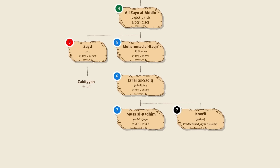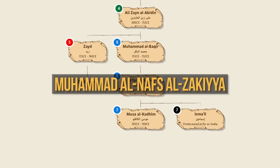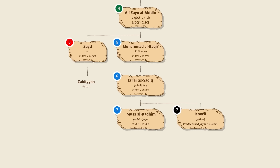During Musa al-Kadhim's time, the Abbasids decided to crack down on the descendants of Ali, called Alids, because of a revolt led by an Alid named Muhammad al-Nafs al-Zakiyya. He was a descendant of Al-Hasan ibn Ali, the second Imam. This resulted in a serious breakdown of relations between the Abbasids and the Alids. Musa al-Kadhim, along with other Alids, had to pay the price — he spent prolonged periods imprisoned in Baghdad. According to the Twelvers, all 12 Imams were murdered: the first Imam Ali was assassinated, the third Imam Al-Husayn died in battle, and the rest were poisoned. For example, Musa al-Kadhim is said to have died in prison in Baghdad by poisoning.